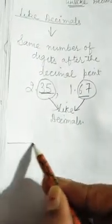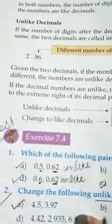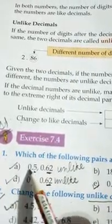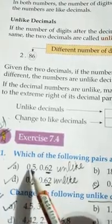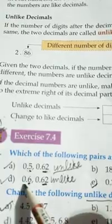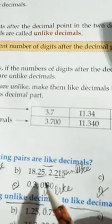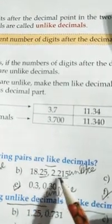Keeping these concepts in mind, we will do the sums of Exercise 7.4. The first sum gives us some decimal numbers and we have to tell whether these are like decimals or unlike decimals. In part a, 0.5 and 0.62 — after decimal one digit here, after decimal two digits here — so these are unlike decimals. Similarly the next pair are also unlike decimals. In part b, after decimal two digits and three digits, so this is also unlike decimal.